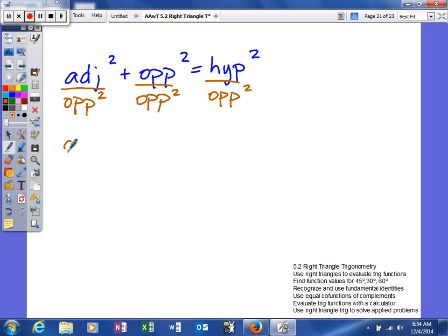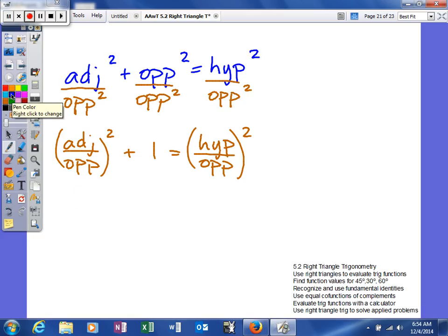When you work this one, you get the adjacent side over the opposite squared, you get plus one, is equal to the hypotenuse side over the opposite squared. So let's see what we have. Here we're going to end up with, let's see, adjacent over opposite, that's cotangent,